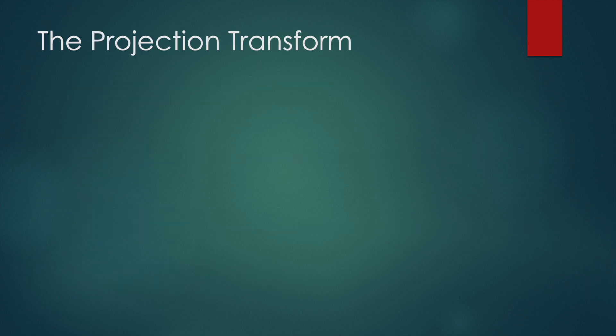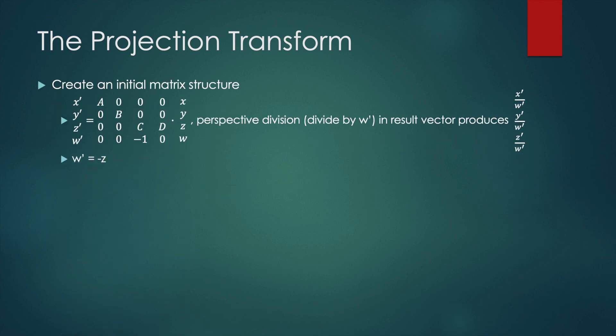To start with the projection transform, we're going to display an initial matrix structure that will make more sense as we derive the values. To start, we have a matrix with constants a, b, c, and d, and a minus one in the bottom row and third column.